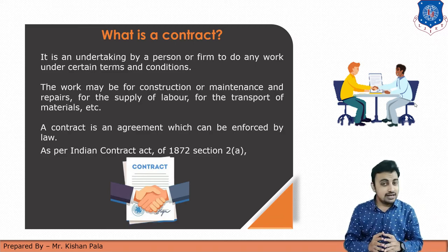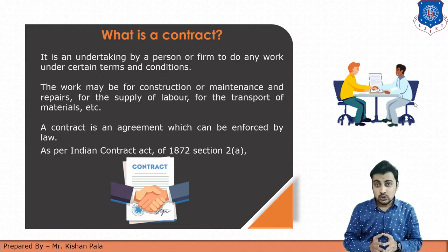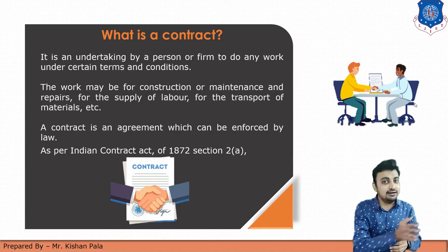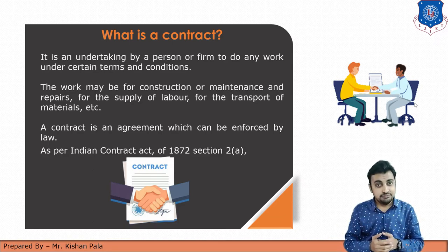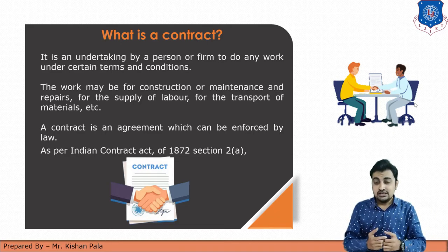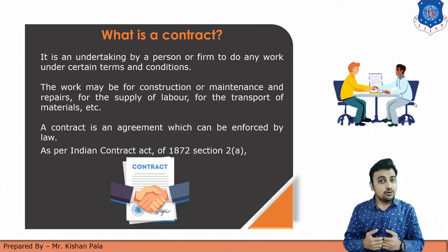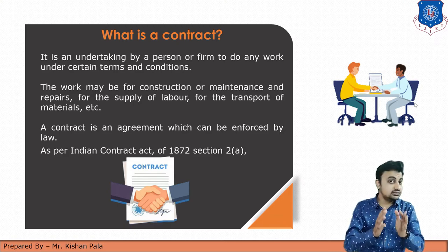To do work under certain terms and conditions — for example, you as a contractor take a contract from the client for a G plus 12 structure, and the client wants M30 grade of concrete. You have to follow the M30 grade; you cannot use M20 or below, because after the contract has been done you must follow the terms and conditions. For instance, if the client wants self-compacting concrete for a certain area, you must use self-compacting concrete. You must follow the terms and conditions mentioned in the contract.